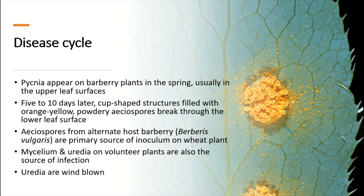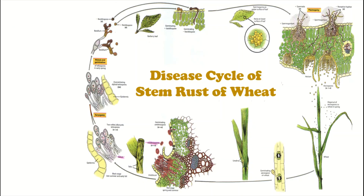Mycelia and uredia on volunteer wheat plants are also a very common source of primary inoculum. Urediospores produced in wheat are airborne and can cause several cycles of infection in the same season. In this disease cycle, different spores are formed on two different host plants — there are five spore types formed across these two hosts.